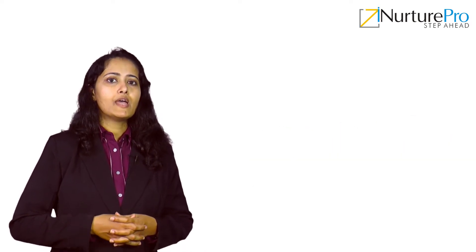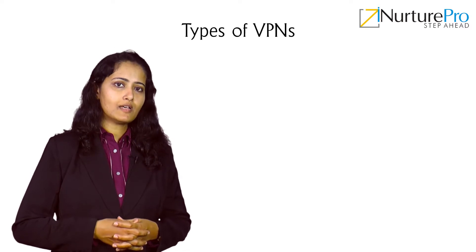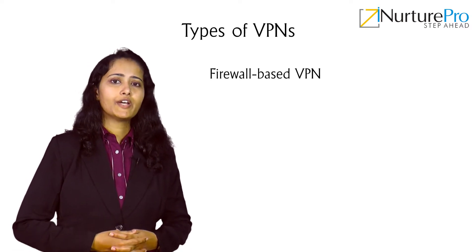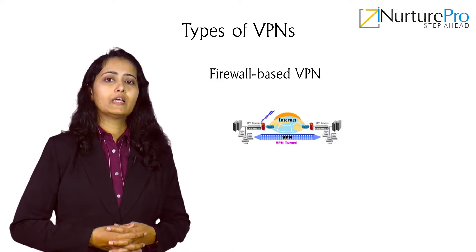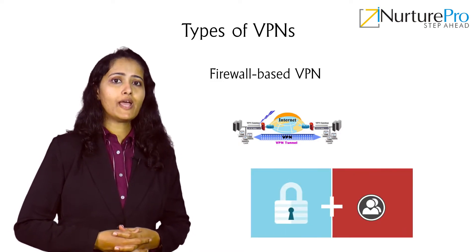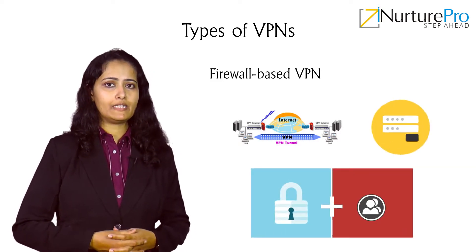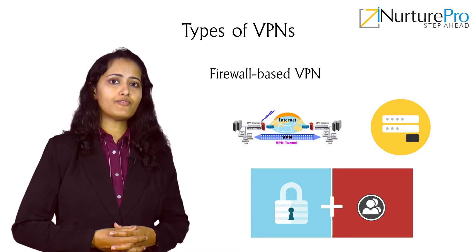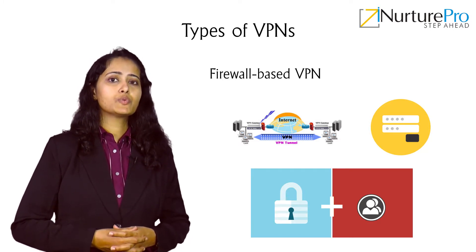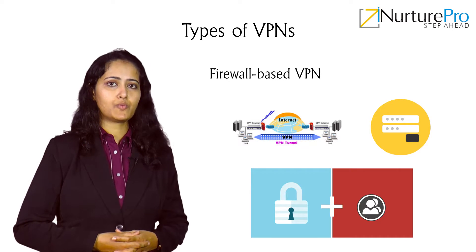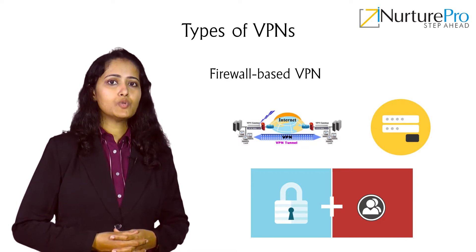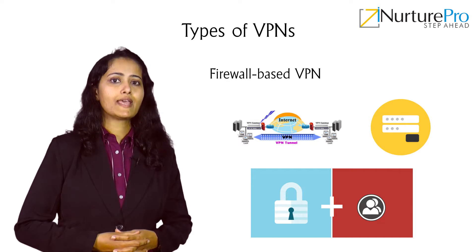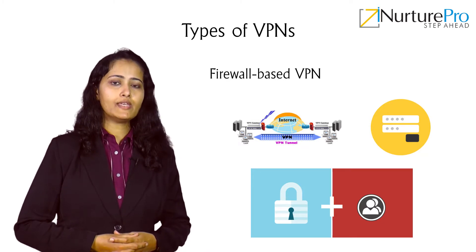VPNs are classified according to how they work. Firewall-based VPNs have both firewall and VPN capabilities. They use security techniques of a firewall to restrict access to an internal network, and also provide user authentication, address translation, extensive logging, and alarms.